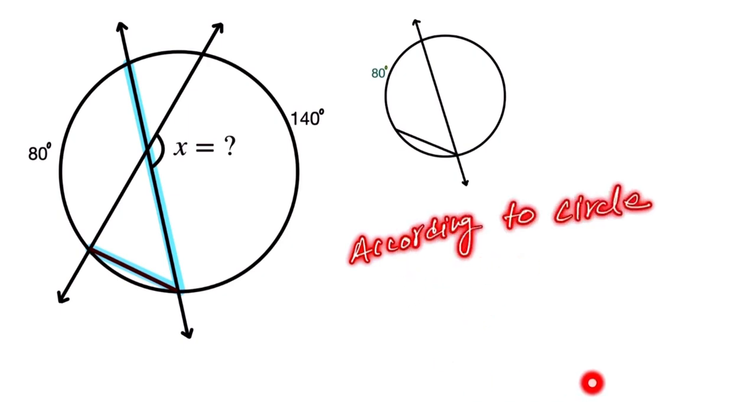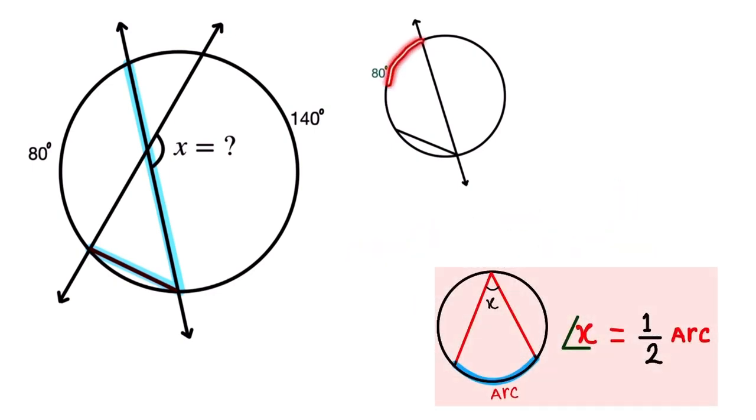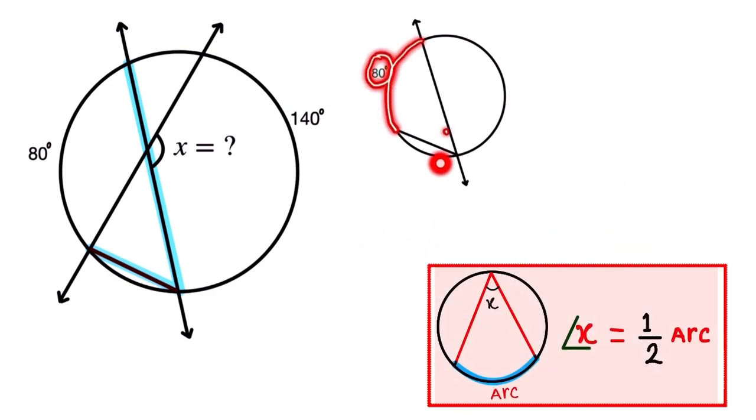we are studying in ninth, when the angle on the circumference is half of the arc. Here is 80 degrees, so this angle on the circumference is half, means 80 by 2 is equal to 40 degrees. Just we rewrite 40 degrees.